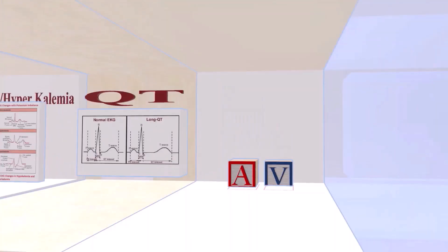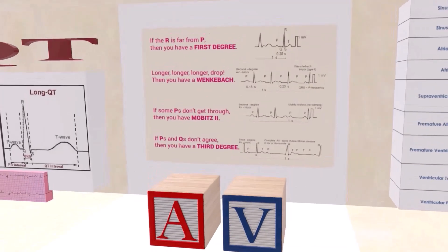The AV blocks room has a poem. 'If R is far from P, then you have a first degree' — meaning a prolonged PR interval. For second degree Mobitz type 1, also called Wenckebach: 'longer, longer drop, then you have a Wenckebach' — there's progressive lengthening of the PR interval until a beat is dropped, meaning a P wave not followed by a QRS. This condition is usually asymptomatic and treatment is generally not required.